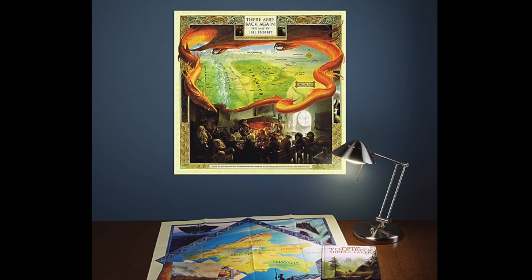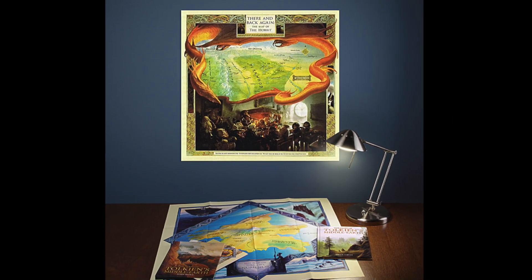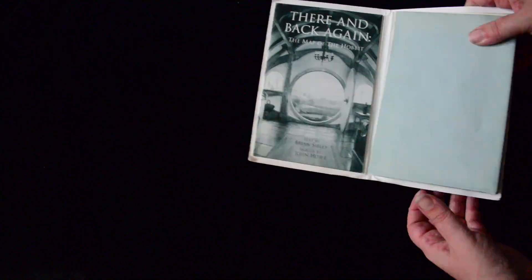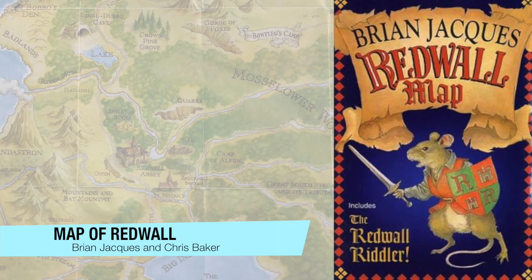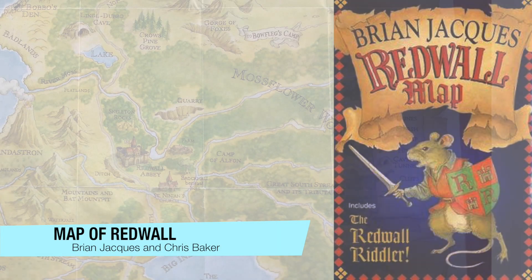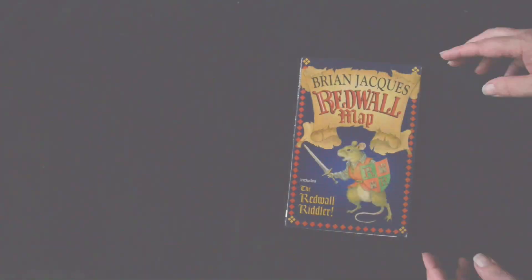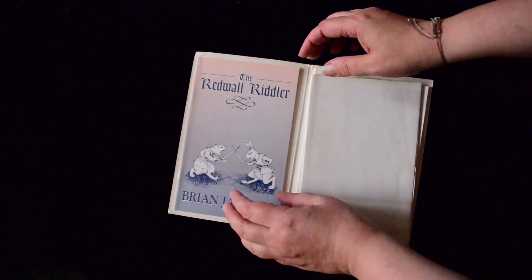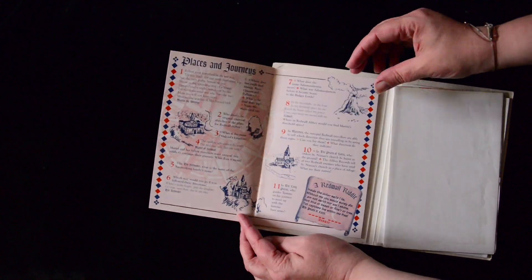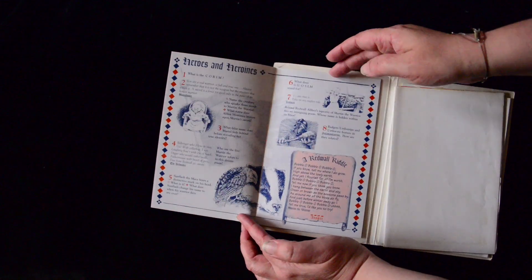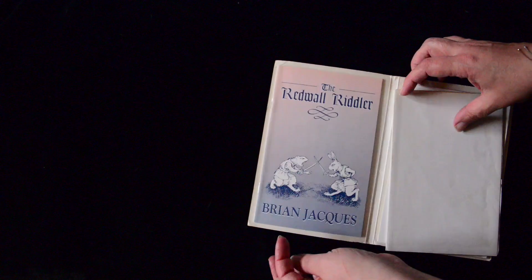I actually have a few of these types of literary conceits in my library — meaning maps of fantastical places that have been created as though they're real places. First I'll show here is Brian Jark's map of Redwall, which comes with a copy of the Redwall Riddler, containing riddles and puzzles based on the series.